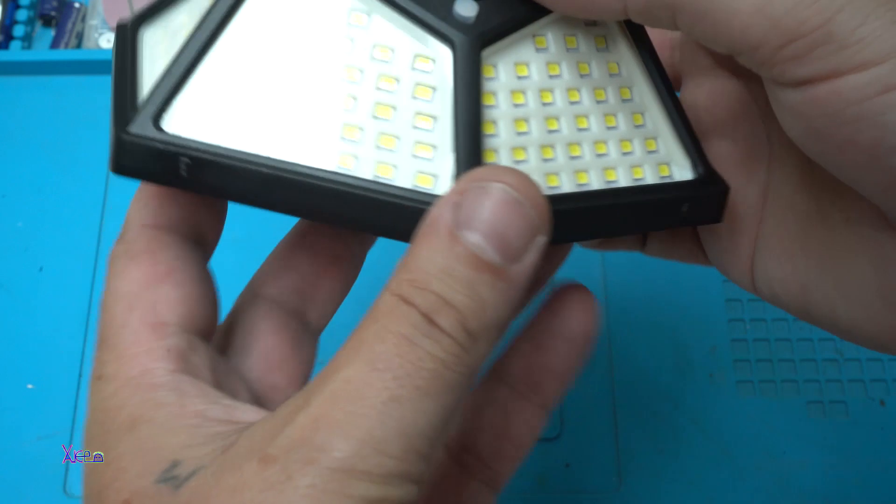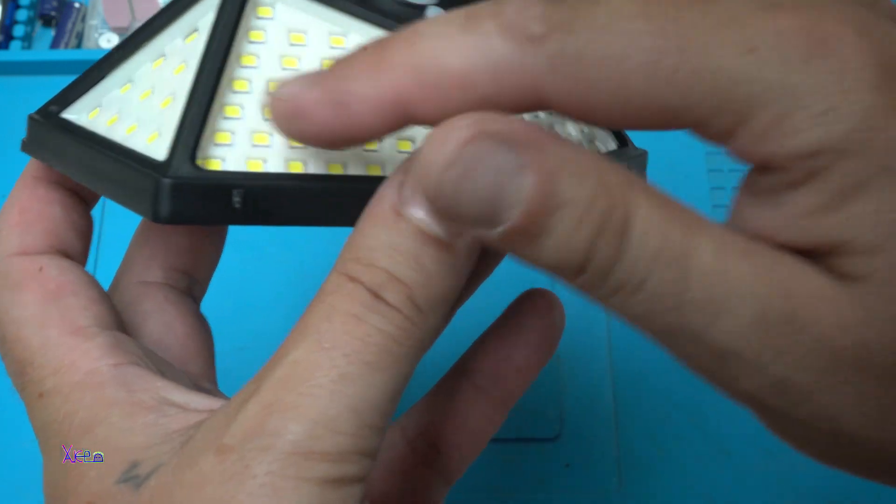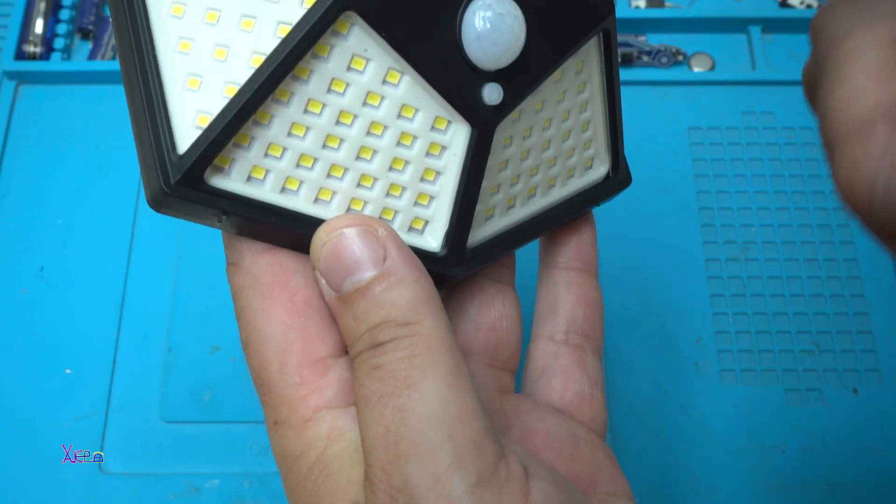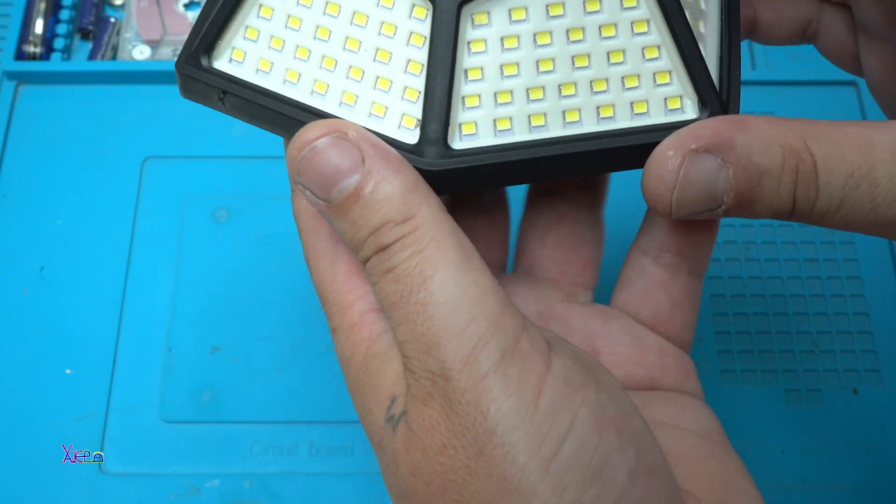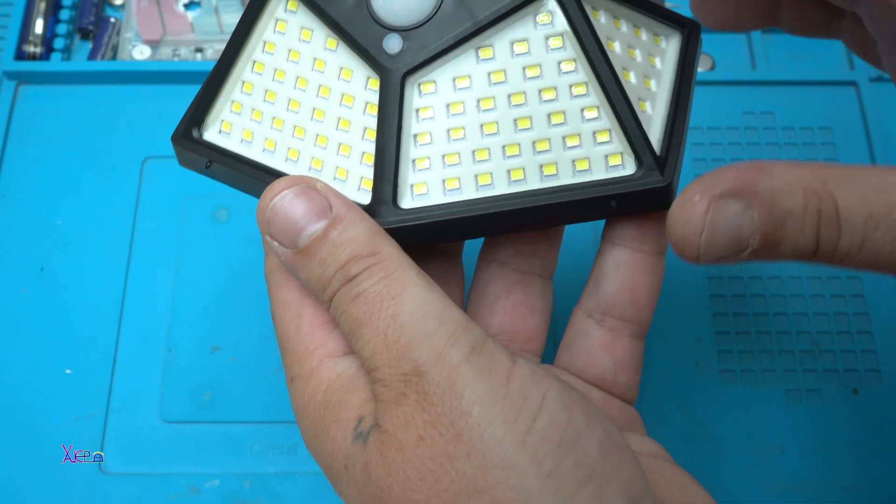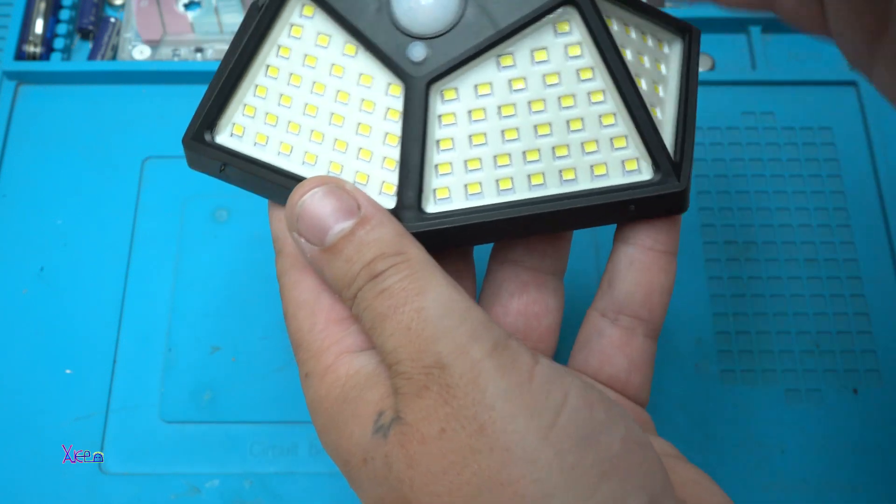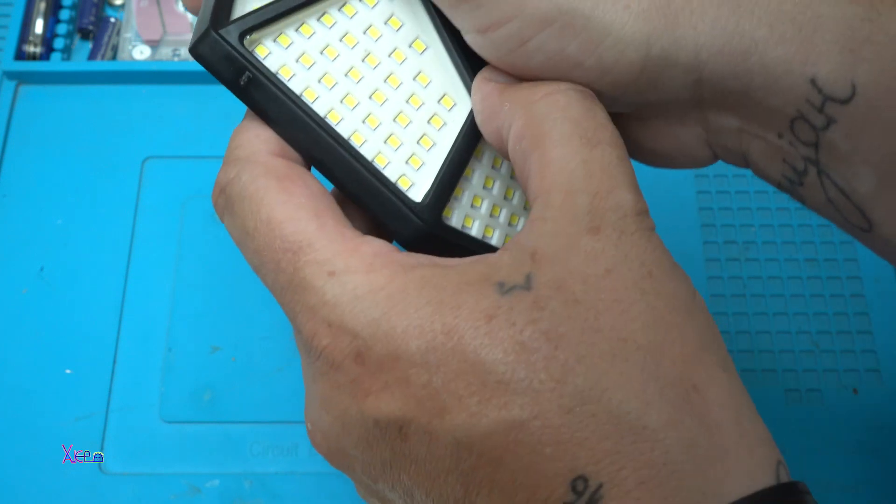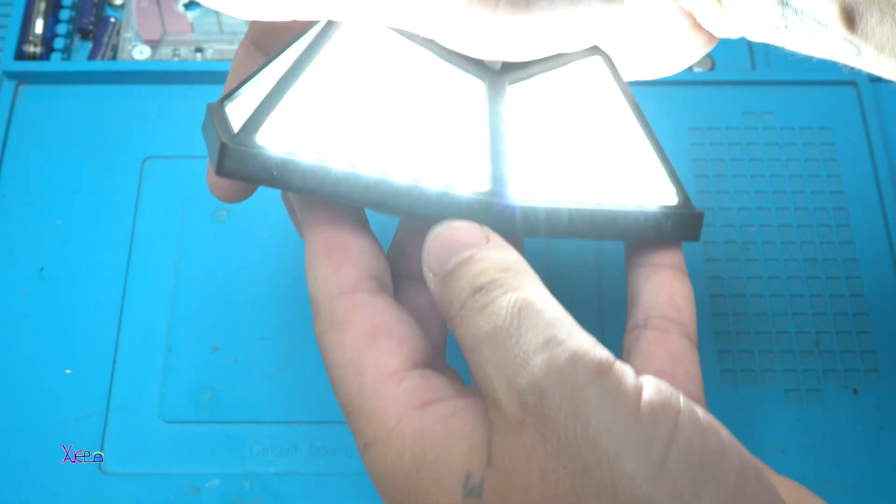PIR sensor and one switch for the LEDs. It also detects darkness. When you press the button, nothing happens because it's light, but if you cover the sensor and press it, here it is.